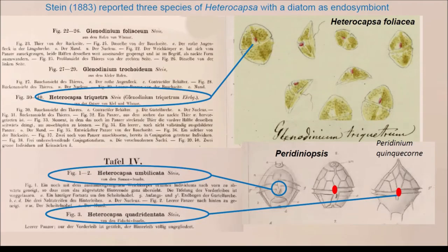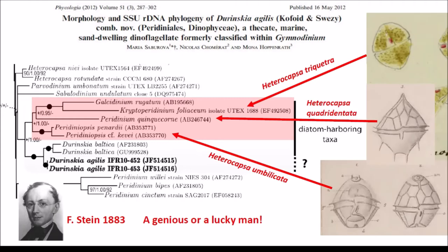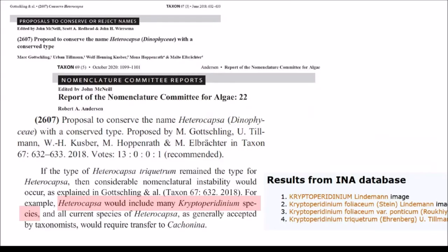Stein described three species with different morphologies, but now that we have molecular data for these species, we can see that they are phylogenetically related and they can be placed in the same genus. Unfortunately, the Nomenclature Committee for Algae interfered in the taxonomy, and the genus Ethelokapsa — which was created for species with an endosymbiotic title — had its original sense changed.